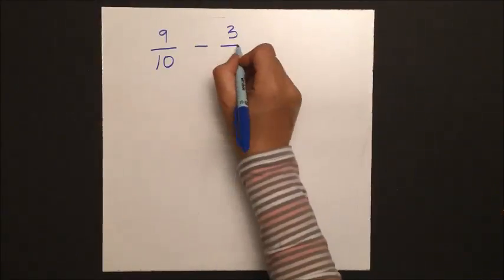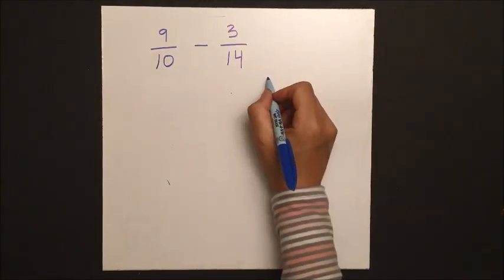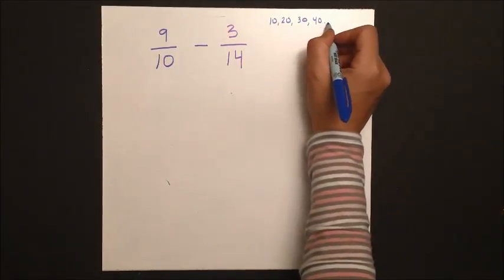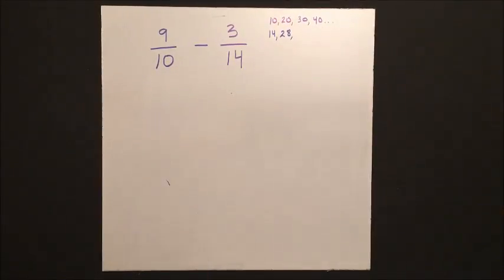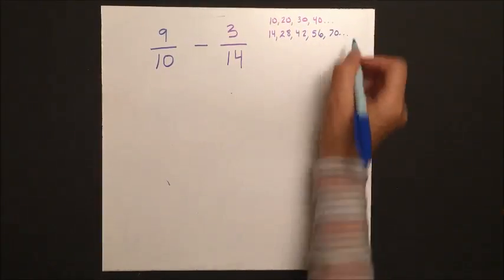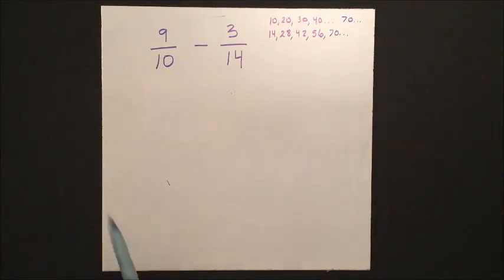Our last problem is a subtraction problem. So first step is find a common denominator by listing out the multiples of both numbers. In this case, the common multiple is 70.